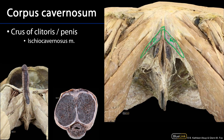On the penis, the crura are also in association with the ischiopubic rami and then they ascend the shaft of the penis laterally. You can see them right there in the transverse section. We can see the corpora cavernosa along the dorsal aspect of the penis, and we can see the deep arteries of the penis within the corpora cavernosa.